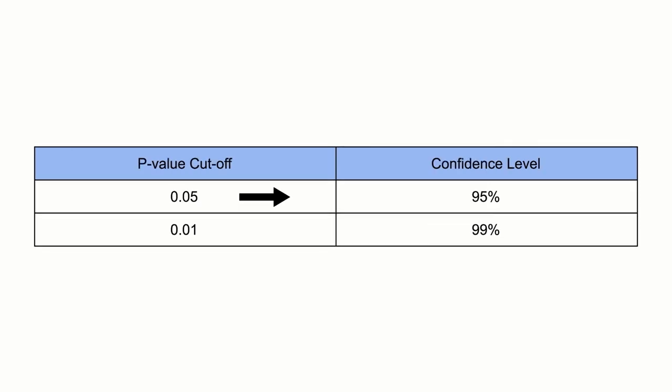How low does the p-value have to be in order to conclude the means are different? The most common cutoff is 0.05, which corresponds to a 95% confidence level. Sometimes, however, researchers require more evidence before concluding there is a difference, and they set the cutoff at 0.01. This corresponds to a 99% confidence level.